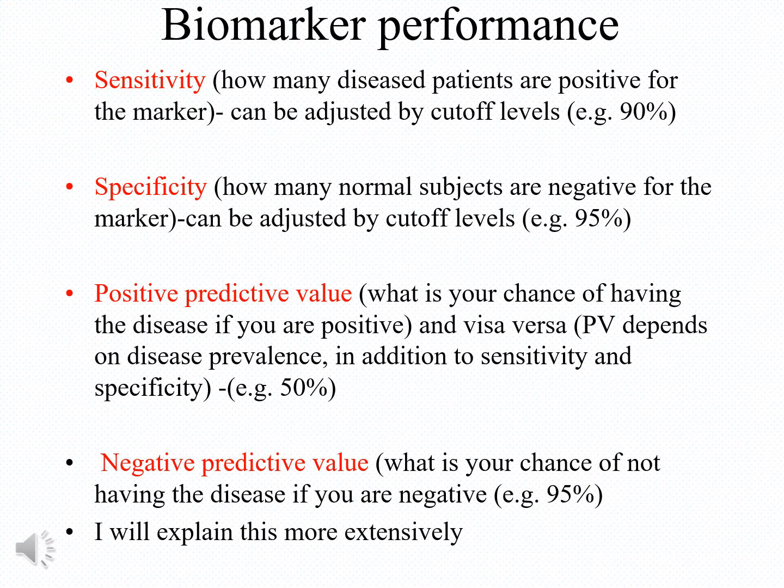The negative predictive value is the opposite — your chances of not having the disease if you are negative. For example, if the negative predictive value is 95%, it means that if you do the test and you are negative, your chances of not having the disease are 95%.